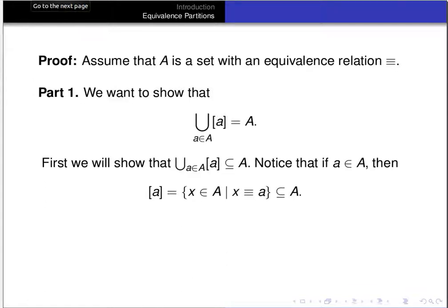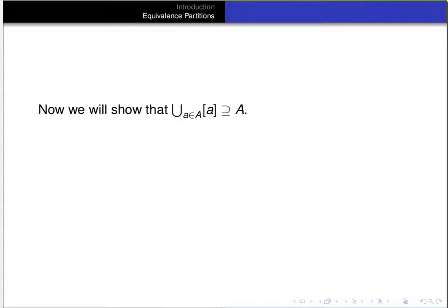So equivalence classes are subsets of the underlying set A, and if you take the union of sets which are all subsets of A, you get a subset of A. Therefore the union of the equivalence classes is a subset of A.